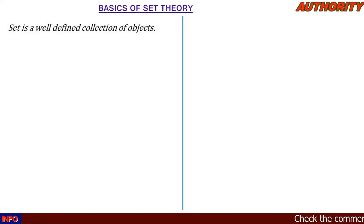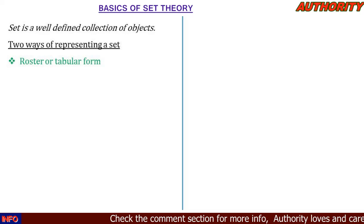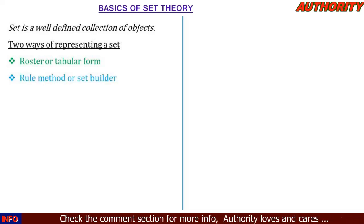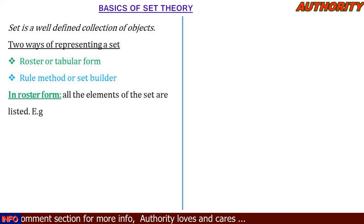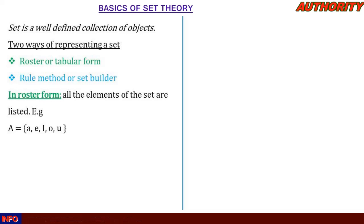We have two ways of representing a set. Number one is roster form or tabular form. Number two is the rule method or set builder form. In roster form, all the elements of the set are listed. For instance, we have a set A and the elements are a, e, i, o, u.